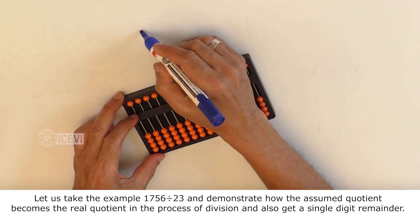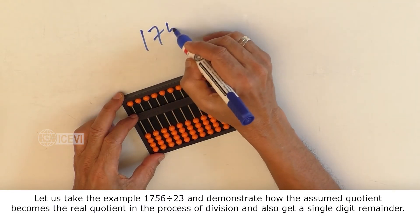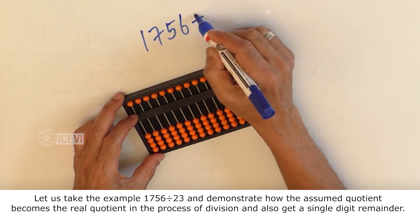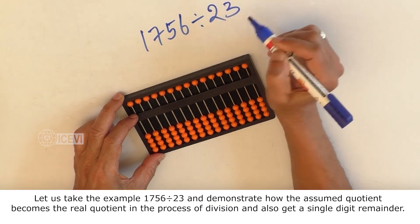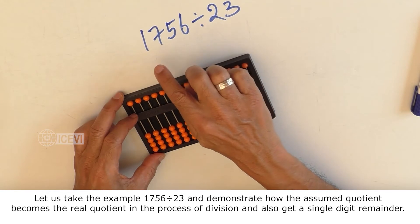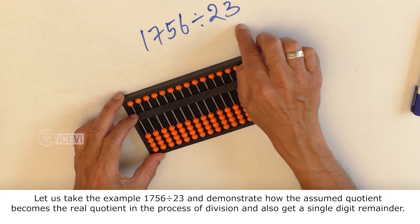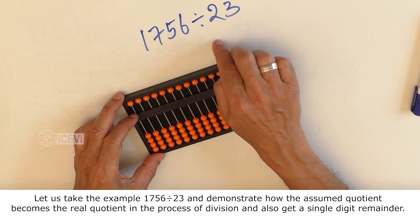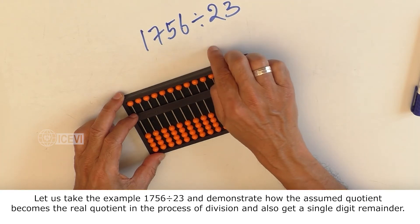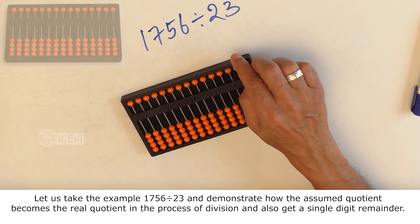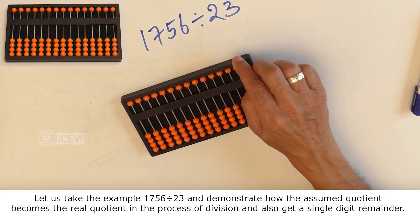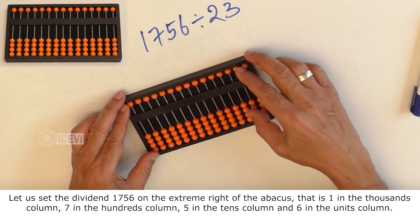Let us take the example 1756 divided by 23 and demonstrate how the Assumed Quotient becomes the Real Quotient in the process of division and also get a single digit remainder.